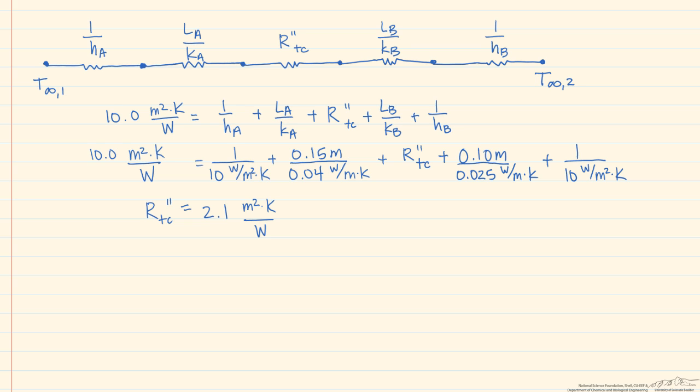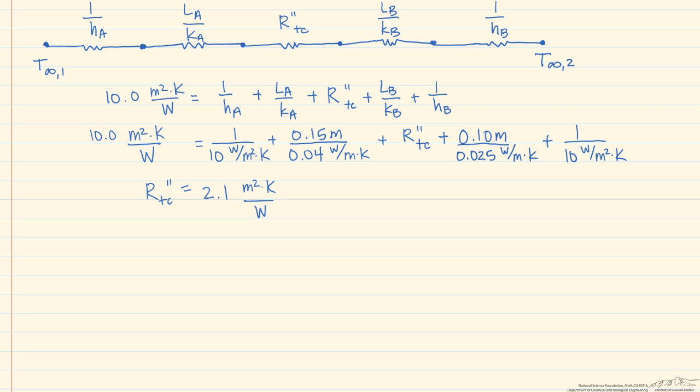Now let's take a look and see what would happen to the flux if we did not include that contact resistance, but had the same temperatures. So we're going to use the same equation that q is equal to our change in temperature, 250 degrees C minus 50 degrees C over our total resistance.